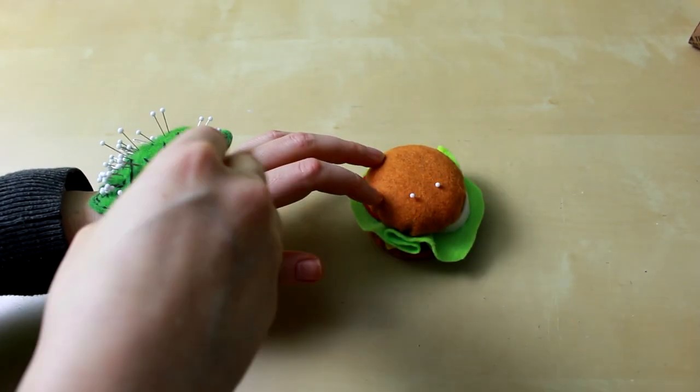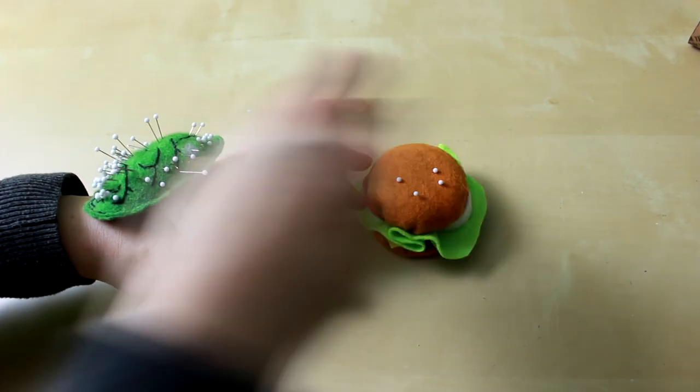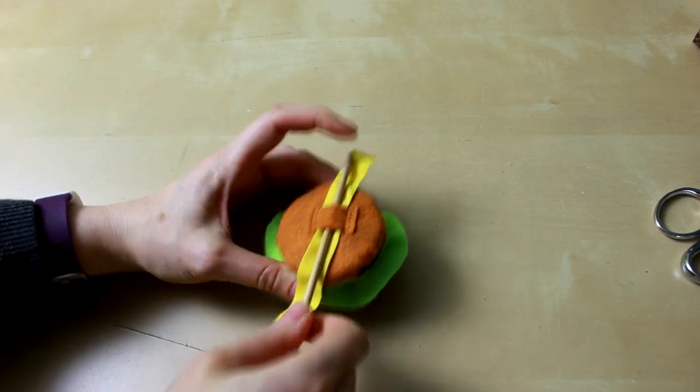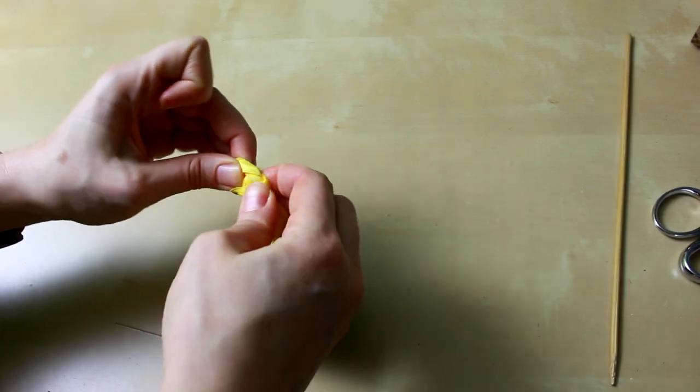If you want to add the wristband, now is the time to turn the whole thing over and string your elastic through. I like fold-over elastic because you can just tie the ends off after fitting it to your wrist.